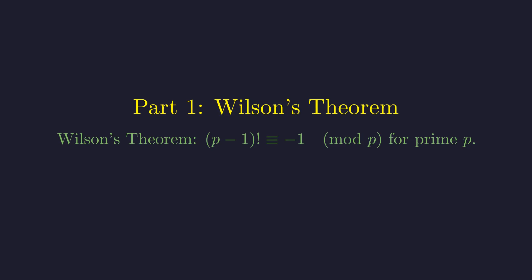Wilson's theorem states that for any prime number p, (p-1) factorial is congruent to negative 1, modulo p.